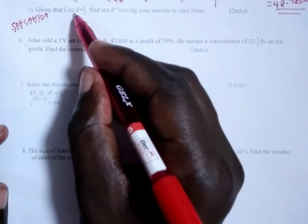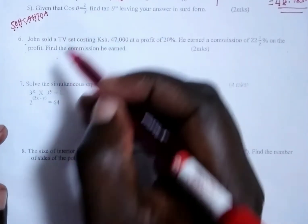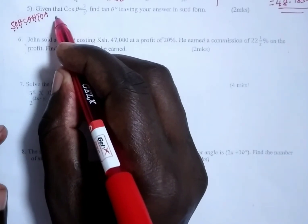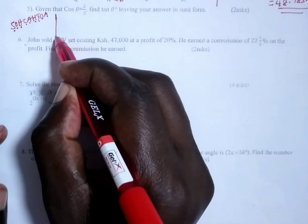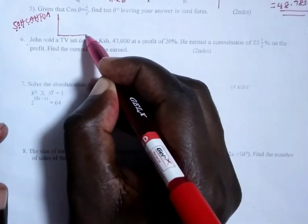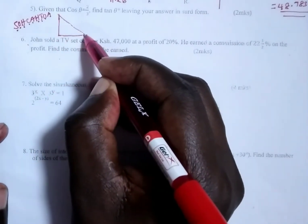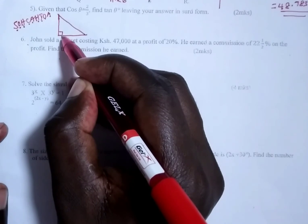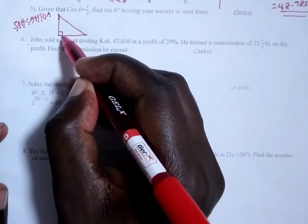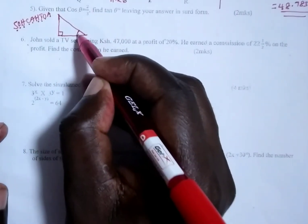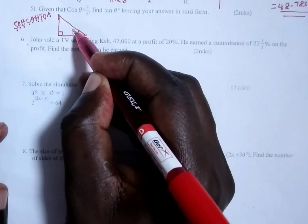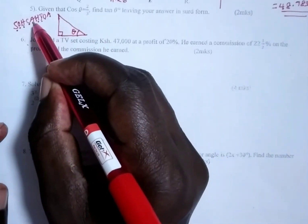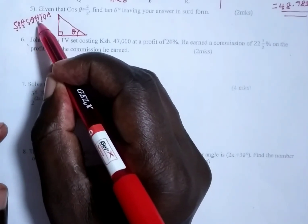We have been given the cosine of an angle, and remember, any time we are dealing with trigonometry, we use a right-angled triangle. This is 90 degrees, and we are told the cosine of an angle, assuming we place our theta here. And if we have cos θ, cos is given by the adjacent over the hypotenuse.